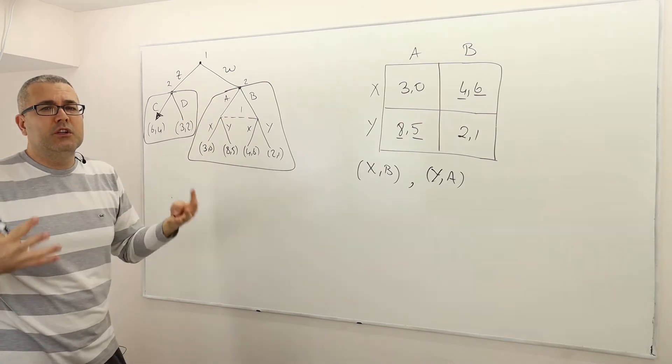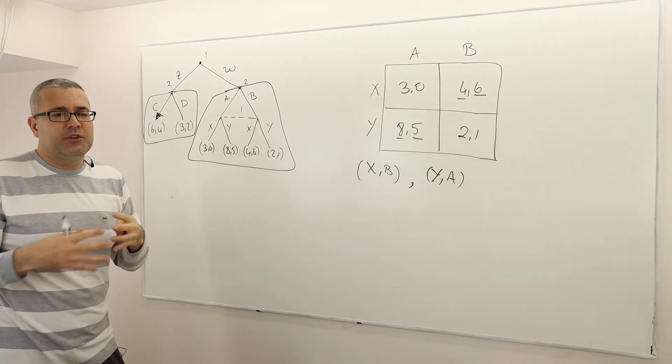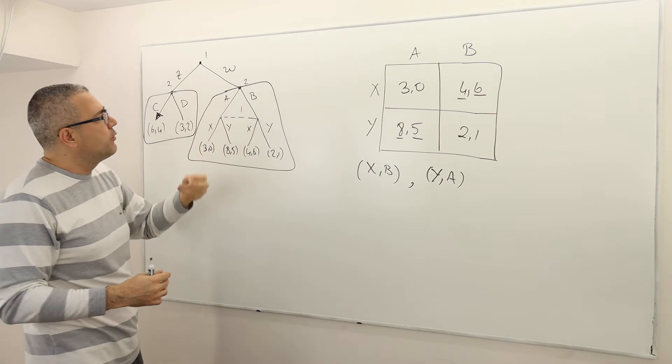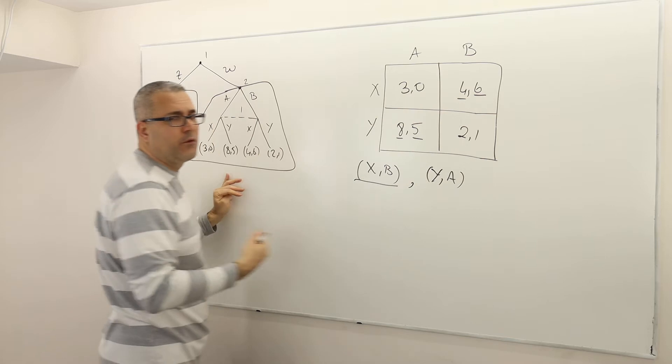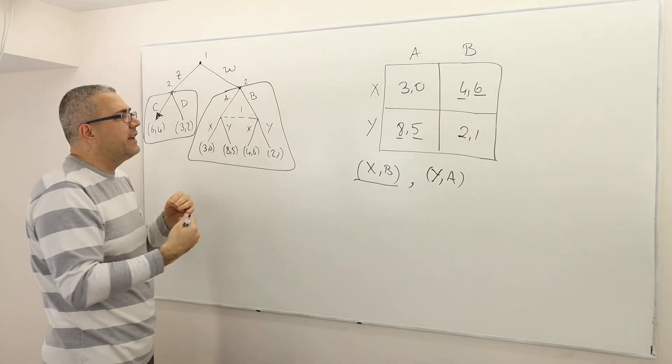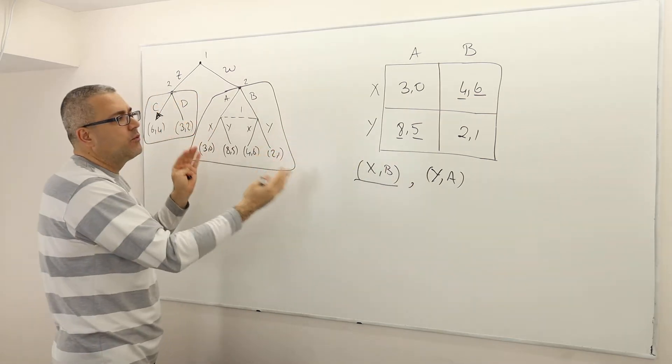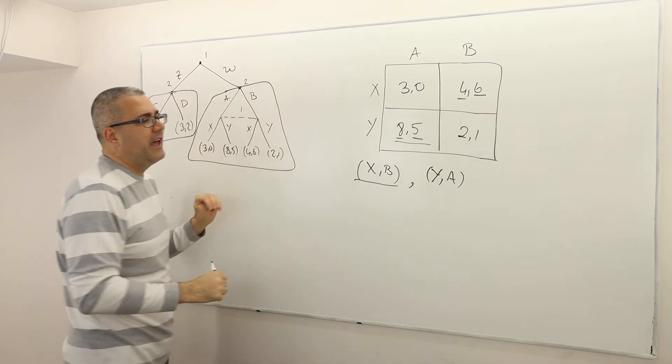well, there are two potential outcomes. Well, one outcome could be here, they may end up playing X,B, which corresponds to payoff 4,6. Or they can end up playing Y,A, which corresponds to payoff 8,5.